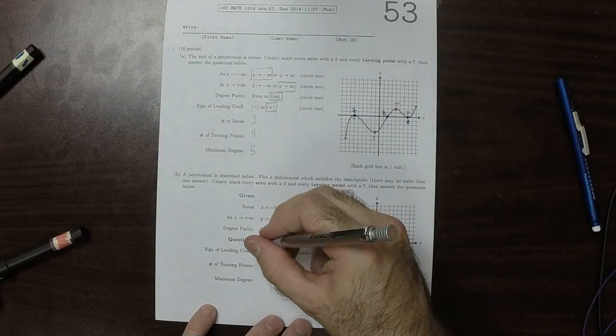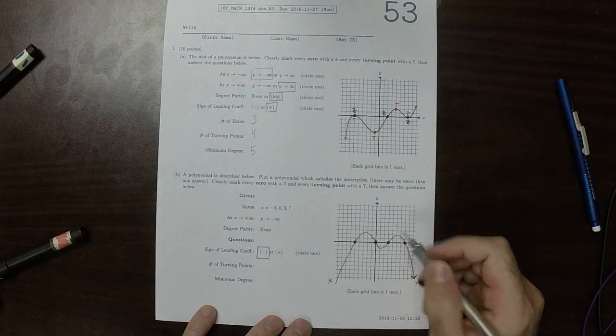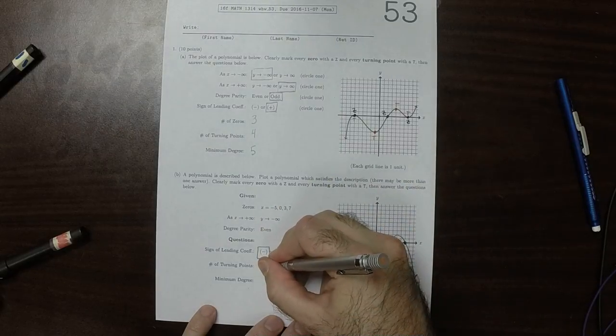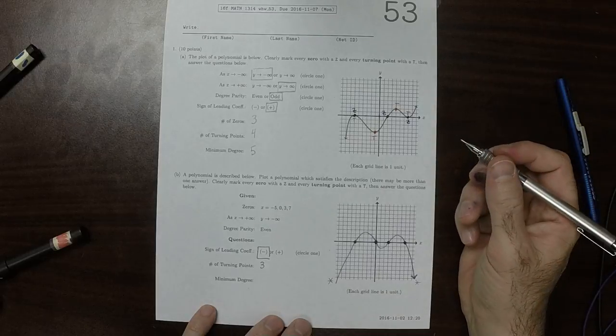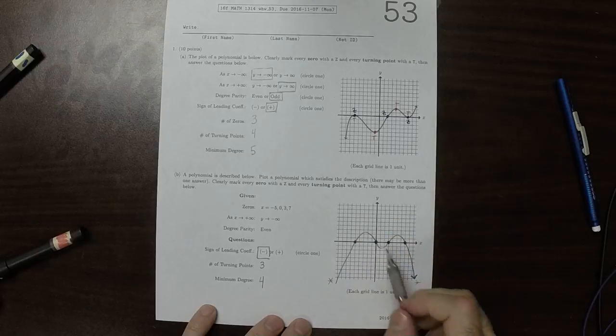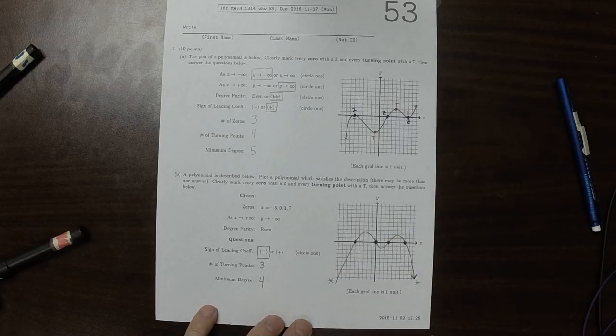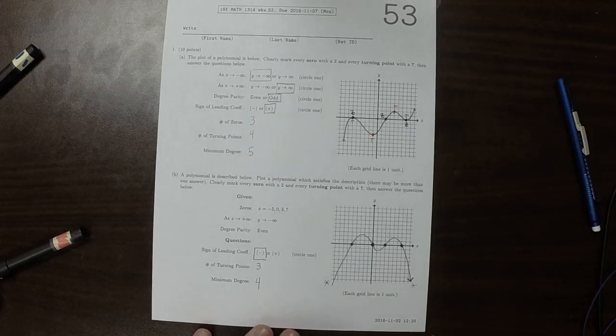The sign of the leading coefficient needs to be negative. The number of turning points is one, two, three. And the minimum degree is four because there's three turning points, so it needs to be at least one more than that. And there's four zeros, which means it needs to be at least that. So four is the minimum.